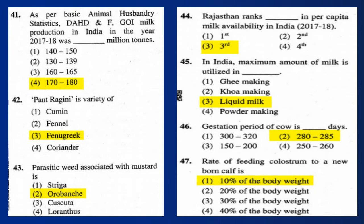Question 41: As per basic animal husbandry statistics from DA, HD and F, GOI, milk production in India in the year 2017-18 was 170 to 180 million tons.